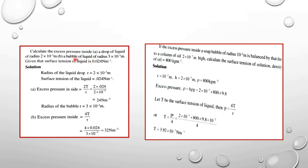For a liquid drop, the excess pressure is 2T/R. For a soap bubble, the excess pressure is 4T/R. These are the two key results.